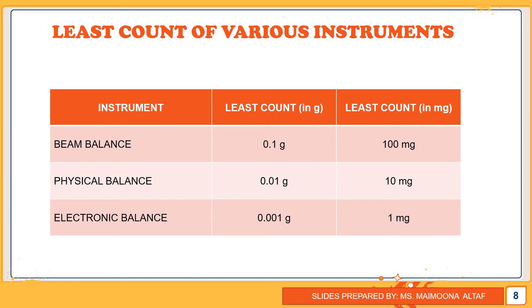Among these three balances, the most accurate measurement is provided by the electronic balance, because its least count is the smallest. The smaller the least count, the more precise the instrument. The beam balance has a least count of 0.1 gram, physical balance 0.01 gram, and electronic balance 0.001 gram. Since the electronic balance has the smallest least count, it provides the most precise measurement.